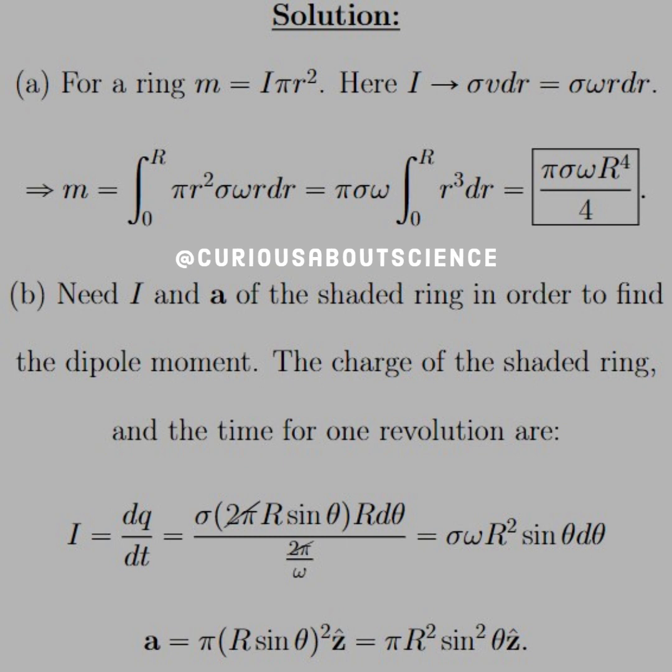Alright, so I is equal to sigma V dr, and we know that V is linear velocity, and what we need is angular velocity. How do we get that? Well, that's omega r.